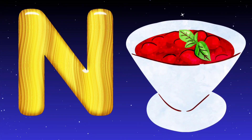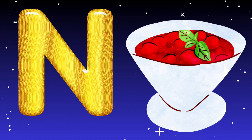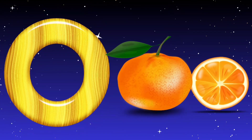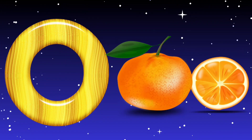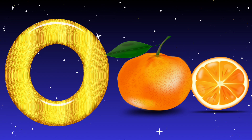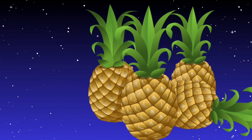N is for new jam. Urdu mein new jam. O is for orange. Orange mean malta.